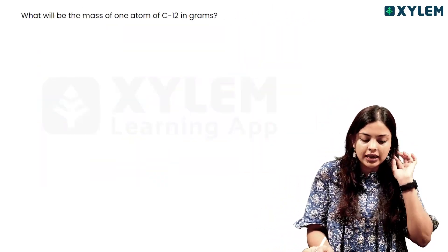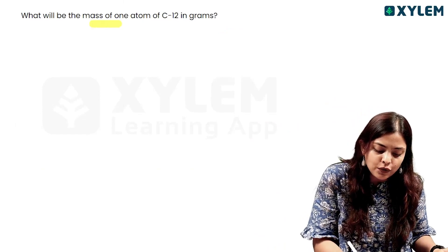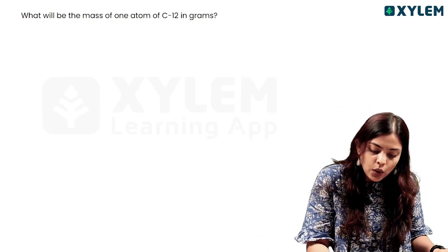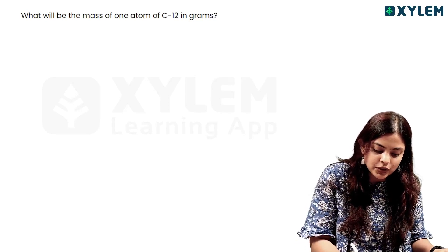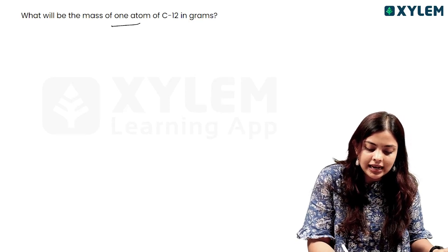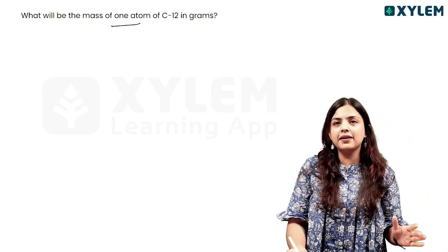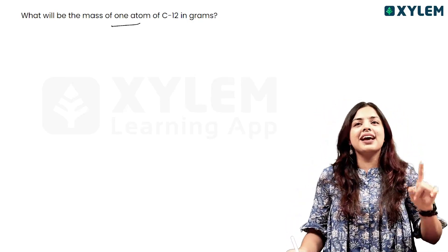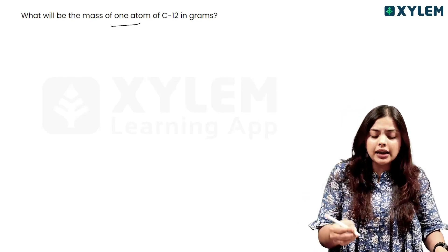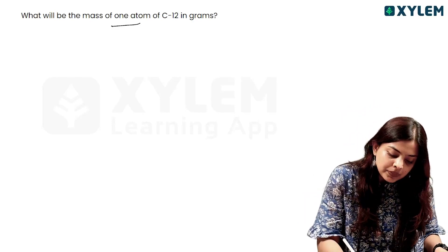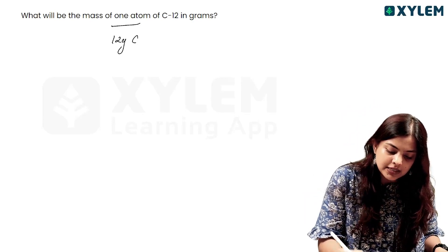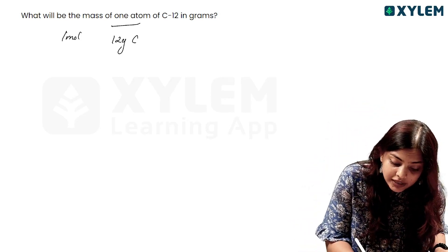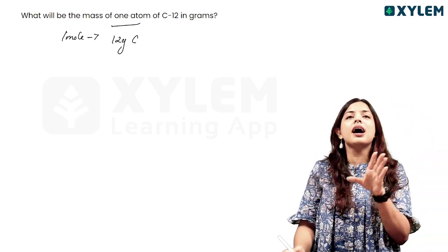The first question is: what will be the mass of 1 atom of C-12 in grams? We have to find the mass of 1 carbon atom in grams. Now, 12 grams of carbon equals 1 mole of carbon atoms.